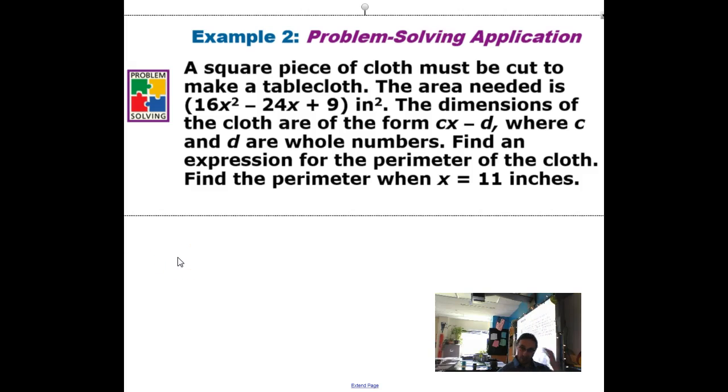The next thing we need to do is like a real-life application. And a lot of area functions and problems that you're going to study in geometry are the product of two binomials. So in this example, a square piece of cloth needs to be cut in order to make a tablecloth. The area needed is that expression right here. The dimensions of the cloth are in the form CX minus D where C and D are whole numbers. Interesting. Okay, but I also know it's a square.